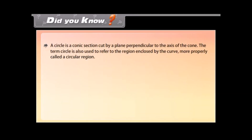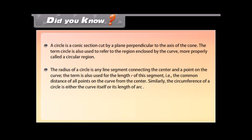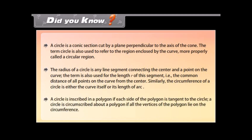Did you know? A circle is a conic section cut by a plane perpendicular to the axis of the cone. The term circle also refers to the region enclosed by the curve, more properly called a circular region. The radius of a circle is any line segment connecting the center and a point on the curve, and also the length r of this segment. The circumference of a circle is either the curve itself or its length of arc. A circle is inscribed in a polygon if each side of the polygon is tangent to the circle. A circle is circumscribed about a polygon if all vertices of the polygon lie on the circumference.